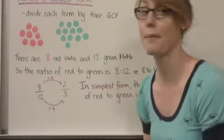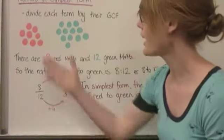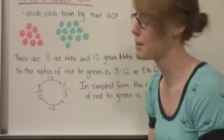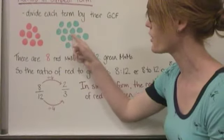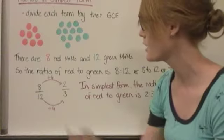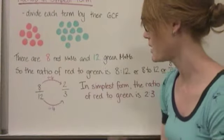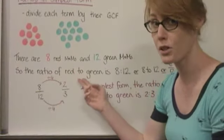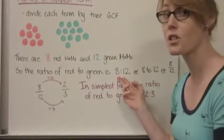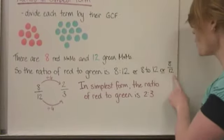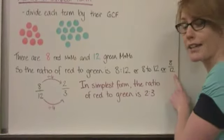So imagine I had some M&Ms in front of me, and I had 8 red M&Ms and 12 green M&Ms. There are 8 red M&Ms and 12 green M&Ms. So the ratio of red to green is 8 to 12, or 8 colon 12, or as a fraction, 8 over 12.